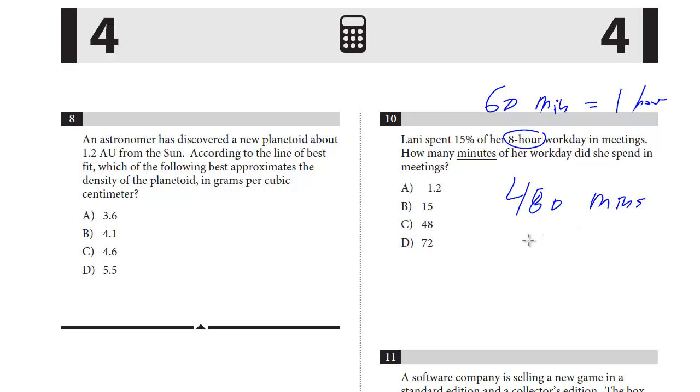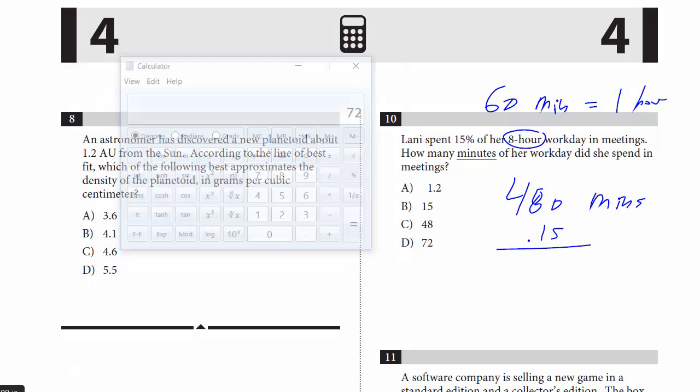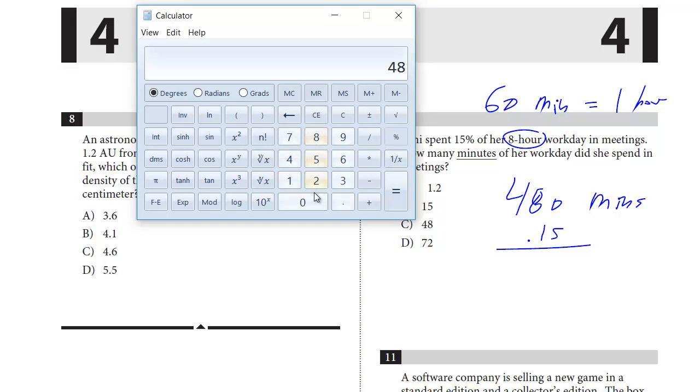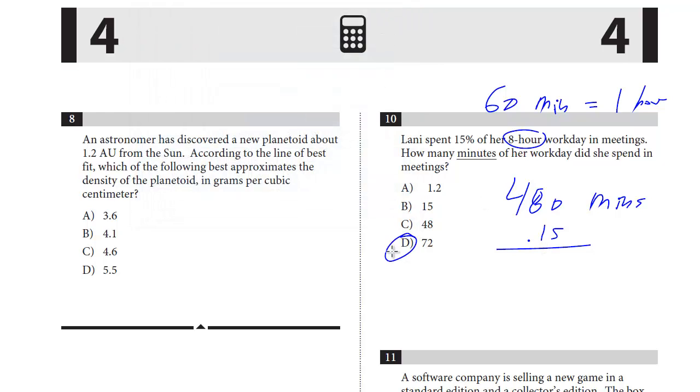And we want 15%. Here I'd probably use the calculator. So it's multiplied by 0.15. So 480 times 0.15 equals 72. And that's the answer.